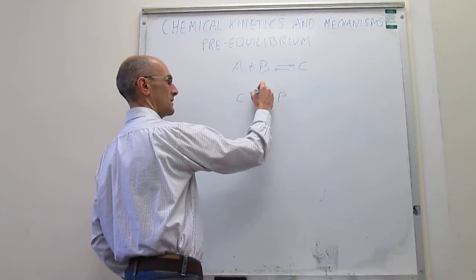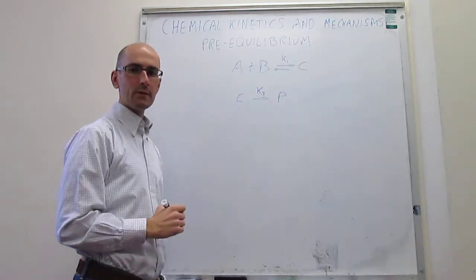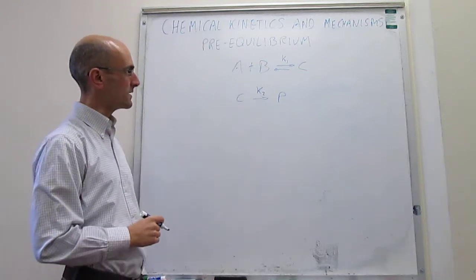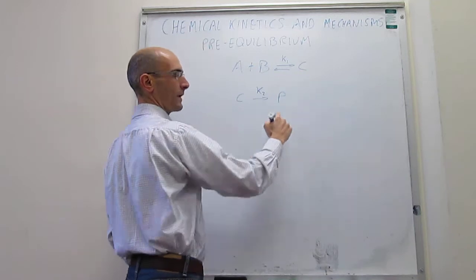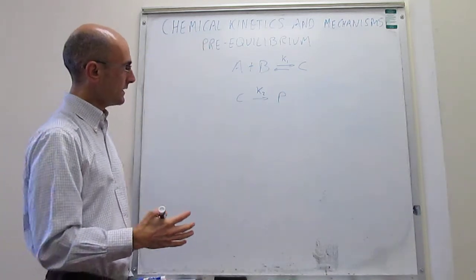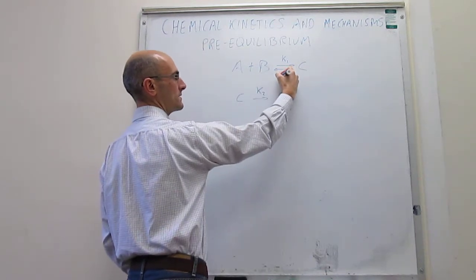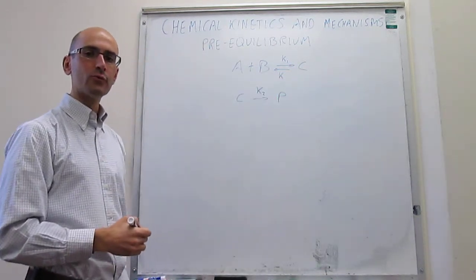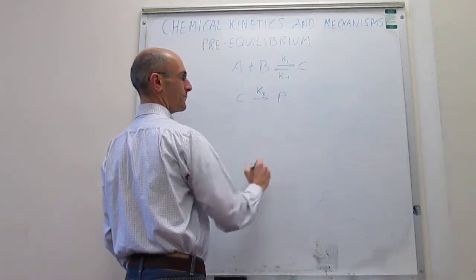We are going to call this rate constant k2, and this one is k1. Something interesting that happens in this situation is that this intermediate has two possibilities. It can either react to generate products, or it can back react to go back to reagents, and that reaction is going to be controlled by a rate constant K minus 1.